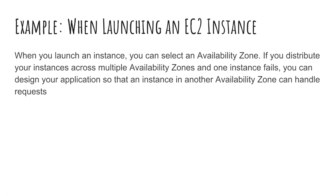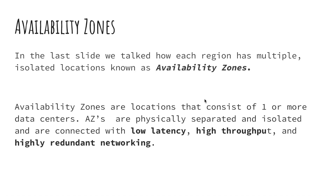The idea is: if your servers fail in one AZ, then you have another AZ — hopefully you've designed your architecture to use multiple availability zones. If one zone fails, the other zone is still working. That's the idea behind separating and isolating them. And that's why low latency is important — you have multiple EC2 instances in multiple availability zones that need to talk to each other quickly with low latency and high throughput. That's why the AZs are connected with low latency, high throughput, and highly redundant networking.